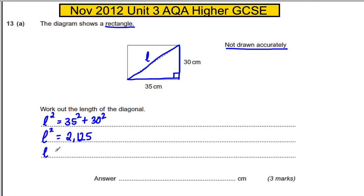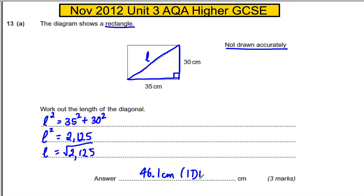So the length is therefore the square root of 2125, and if you decimalise it, you get 46.1 centimetres to 1dp. And that's the length of that diagonal.